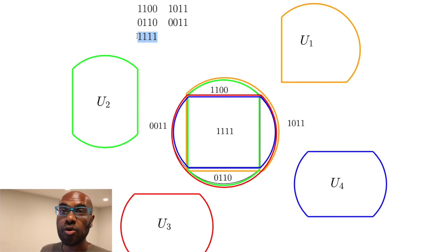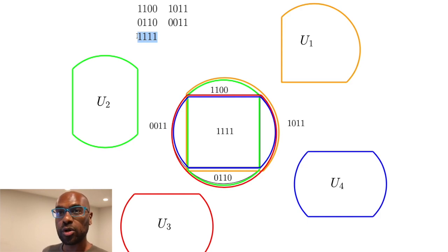If you want to give a concrete reason why, I suggest leaving your thoughts in the comments and talk about why this actually works. So of course the question is, can we find meaningful criteria that guarantee that given a list of binary strings we can actually construct the pictures?